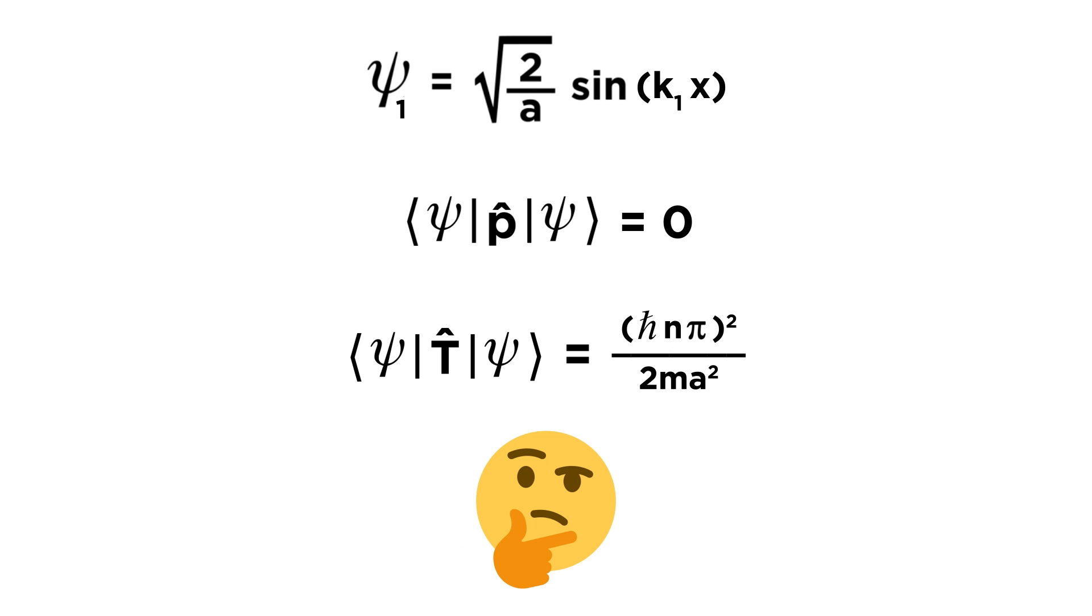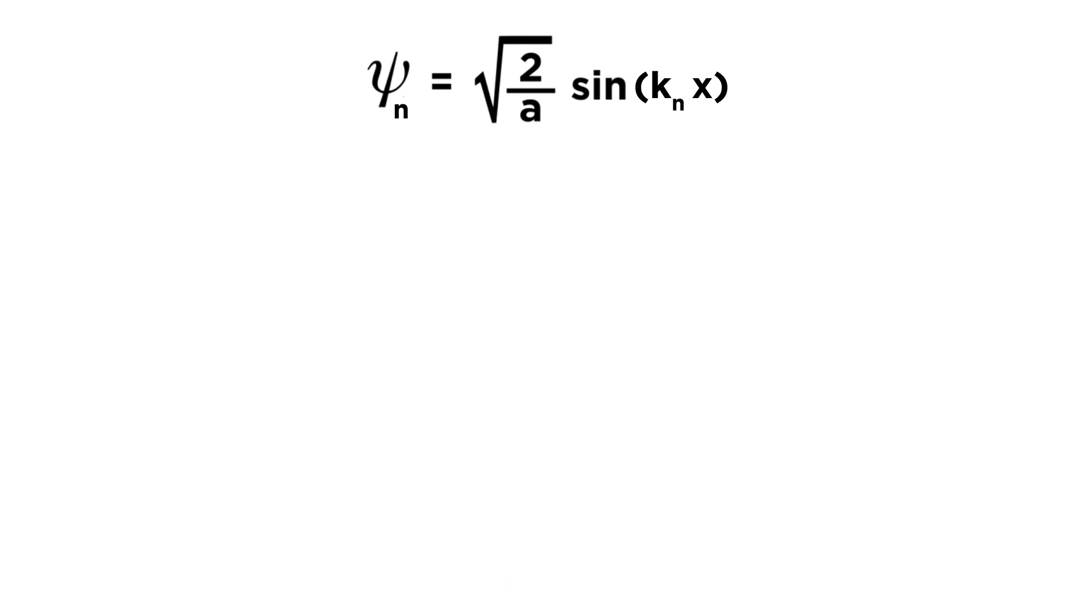This expression is the expectation value for the kinetic energy operator. The most important thing to notice here is that n is squared, which means that kinetic energy increases quadratically with n. These results should initially be puzzling. We saw that the expectation value for momentum is zero, but we also just found that the expectation value for kinetic energy is not zero. How is this possible? The easiest way to understand this is to do some mathematical trickery.